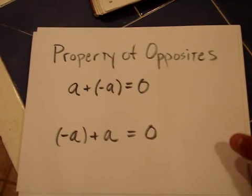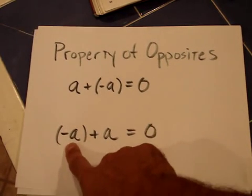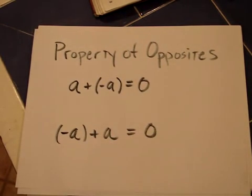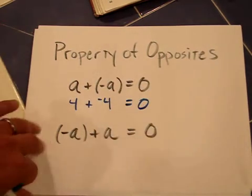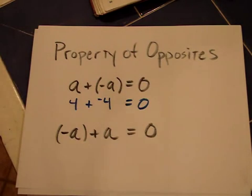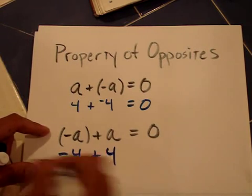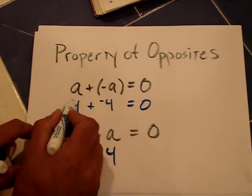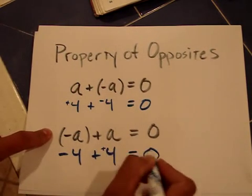The property of opposites says any number added to its opposite equals zero, and an opposite of a number added to the number also equals zero. For instance, 4 plus its opposite negative 4 equals zero. Notice: a number without a sign is assumed to be positive, so negative 4 added to positive 4 also equals zero.